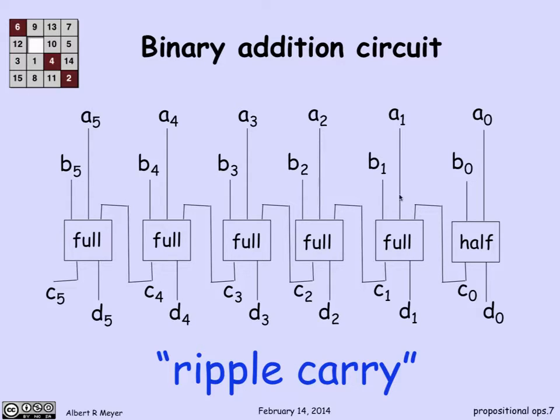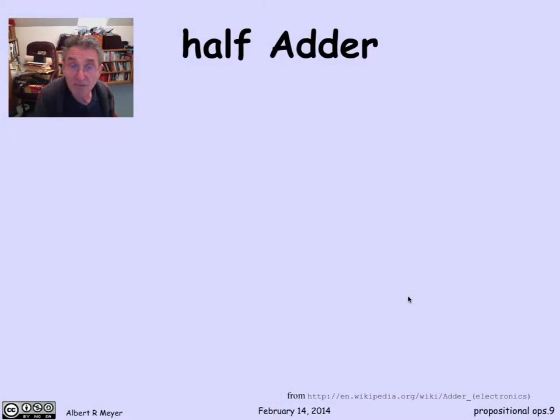The output of a full adder is it gets inputs, three inputs, in this case b1, a1, and the carry c0. And it produces the binary representation of the sum of those three numbers, which is a two-digit binary representation. There might be anything from 0 to 3. Let's start with the easy case. What's a half an adder?